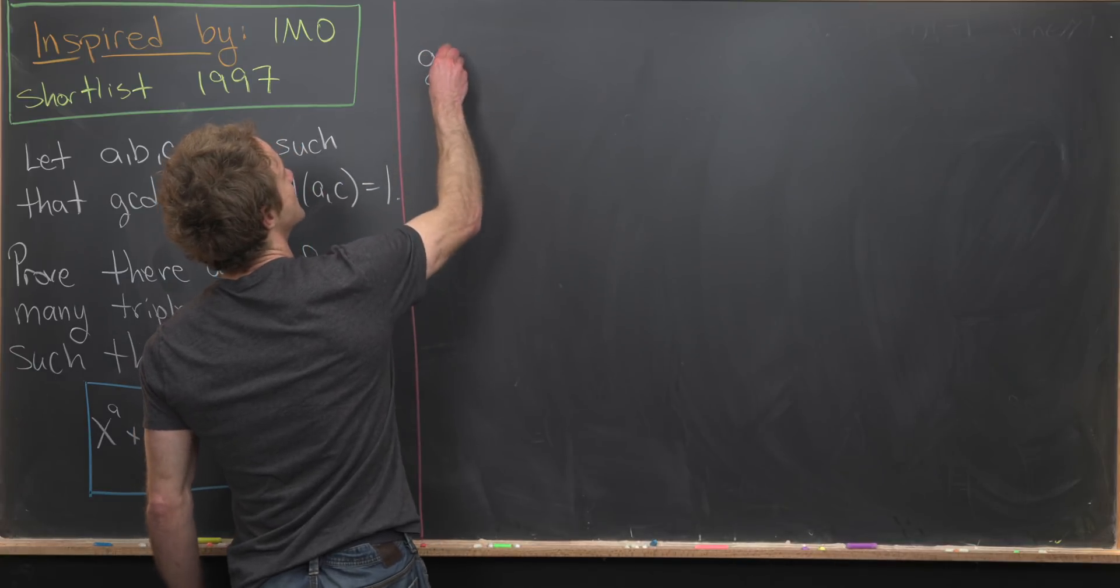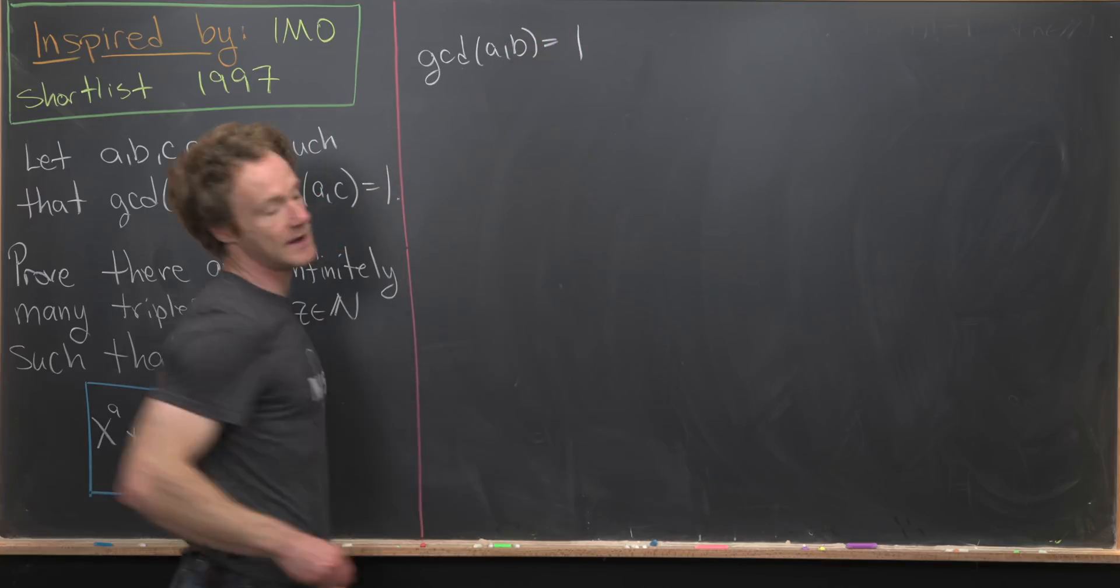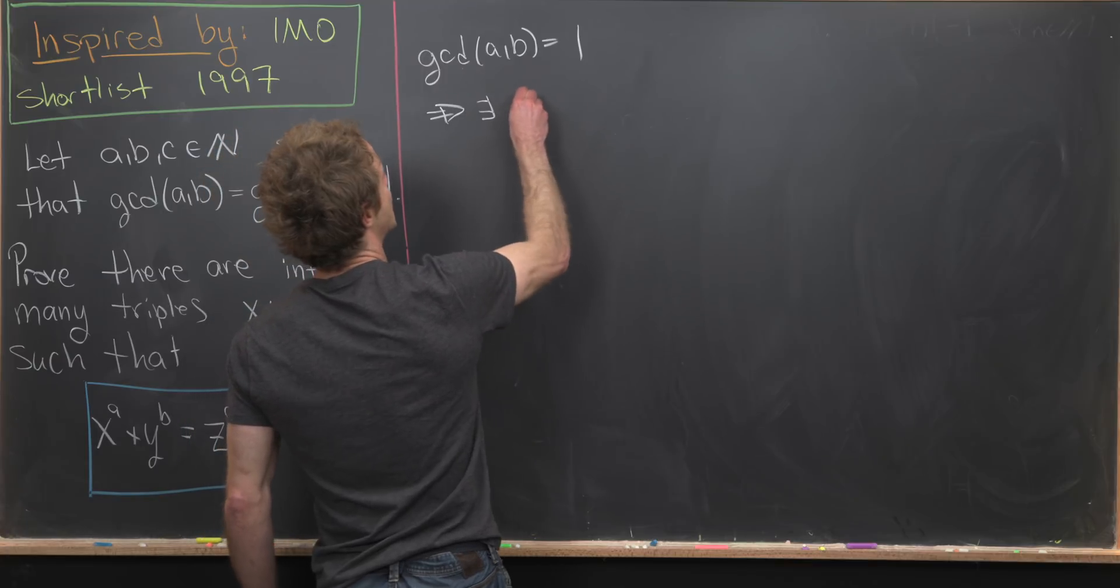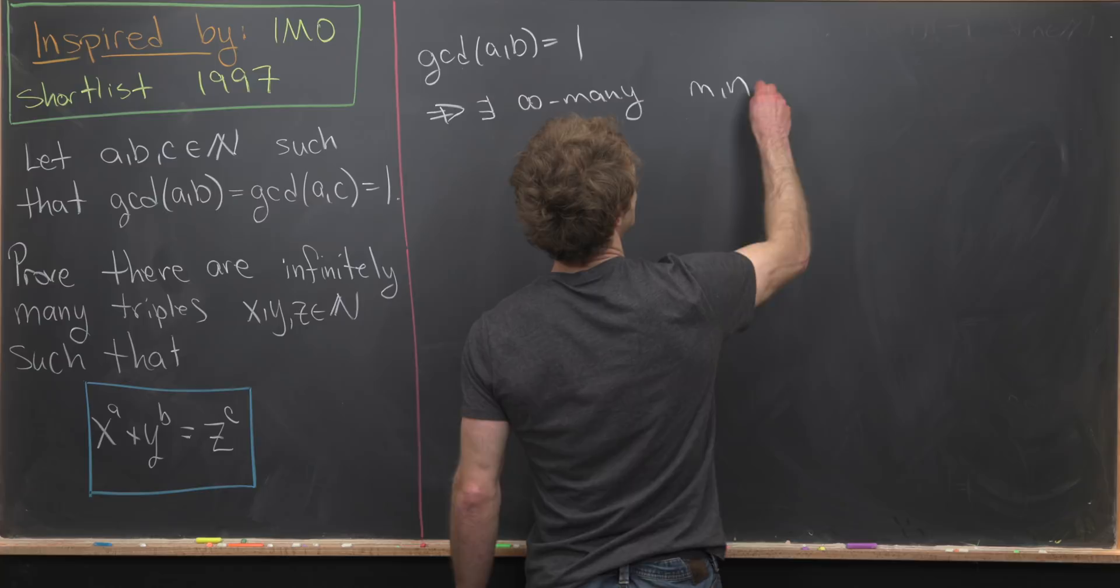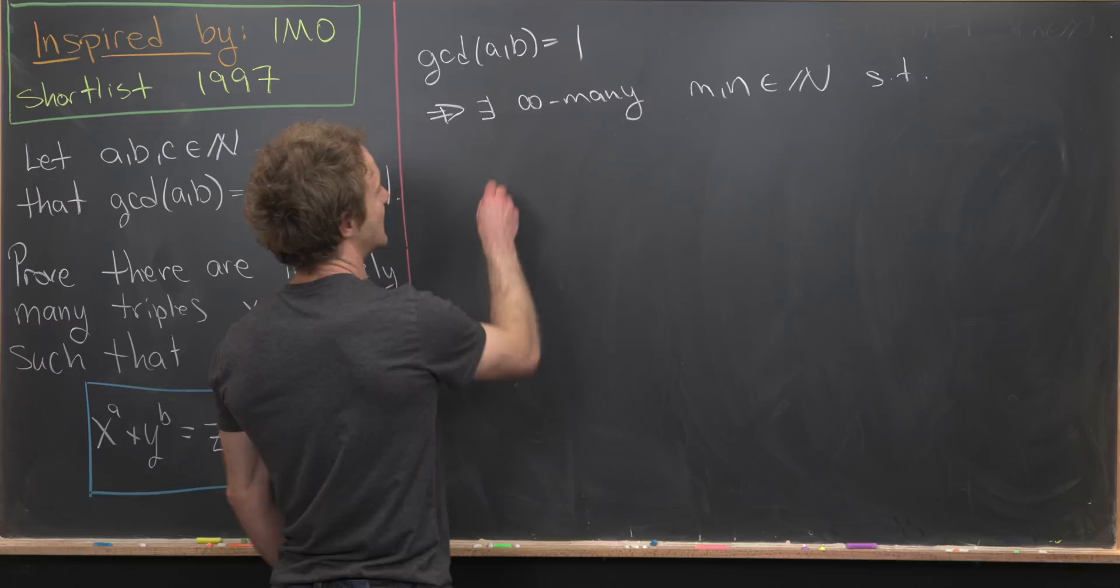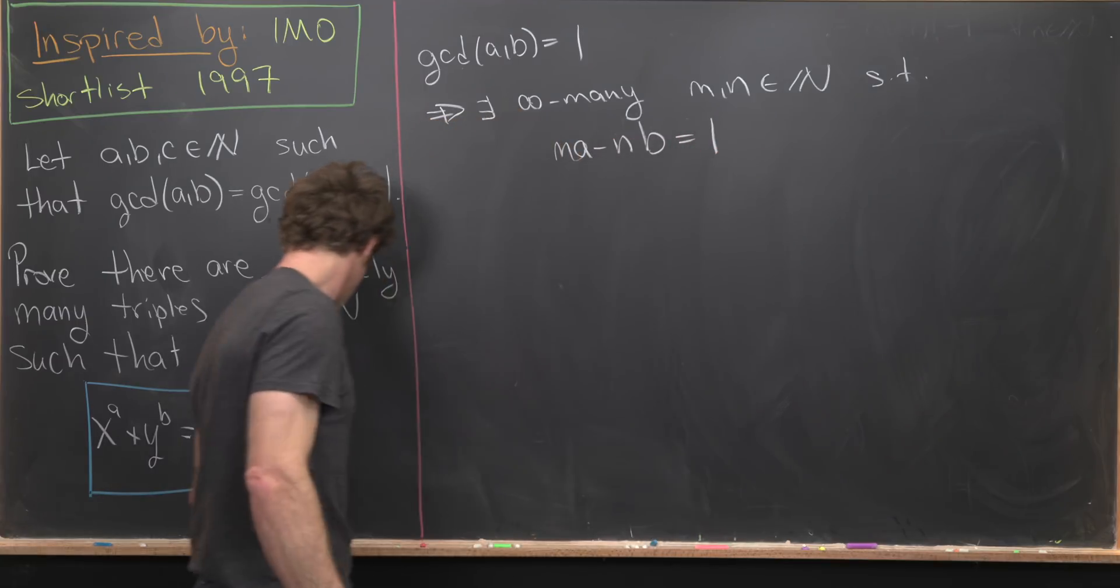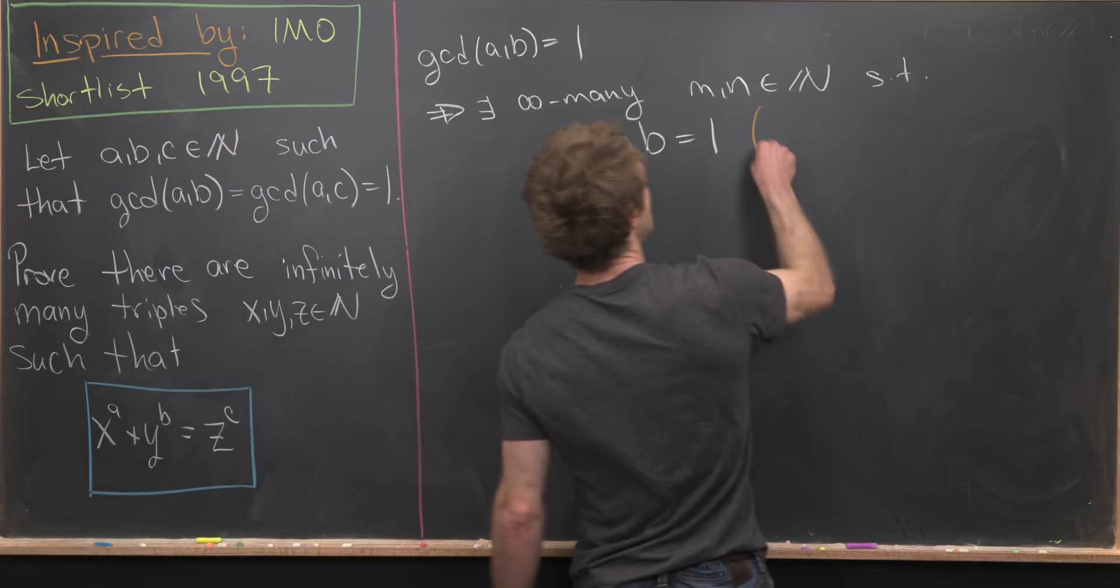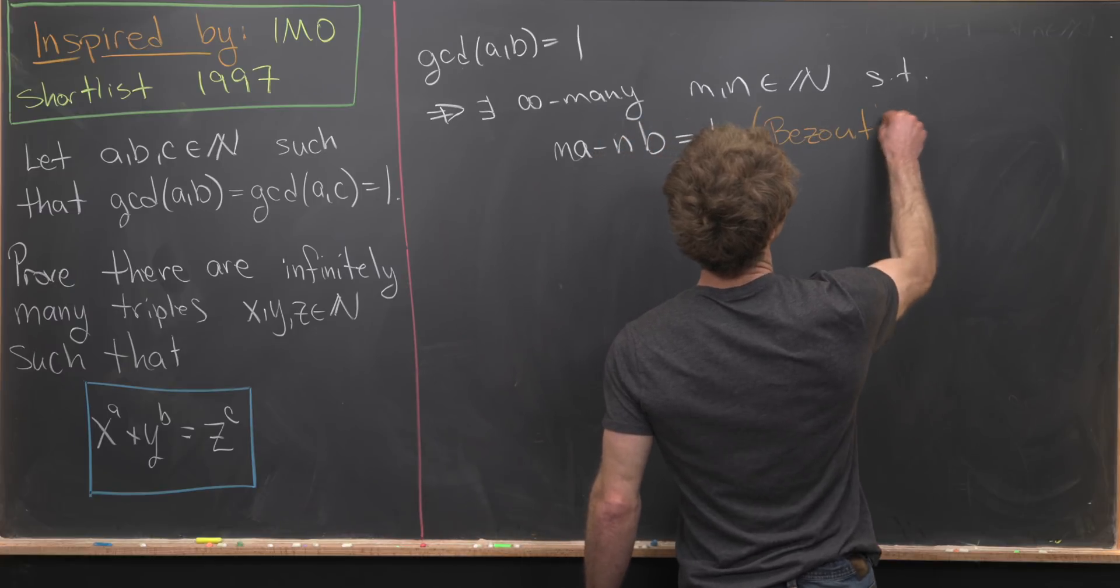So let's maybe first notice that if the GCD of A and B is equal to 1, then that means there exists infinitely many numbers M and N, which are natural numbers, such that we have MA minus NB is equal to 1. So this is like a standard fact from number theory, which is related to something called Bezout's lemma.